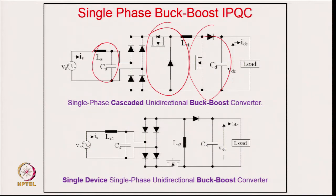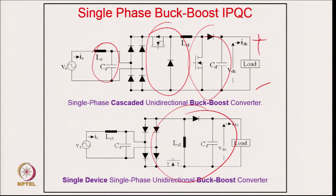In the cascaded configuration we cascade buck then boost. There is also a single-device version — the single-phase uniaxial buck-boost converter — which eliminates one device and one diode compared to the cascaded version. The disadvantage is that the output polarity is reversed, and the voltage across the device is the sum of input and output voltage, which was not the case in the cascaded configuration.